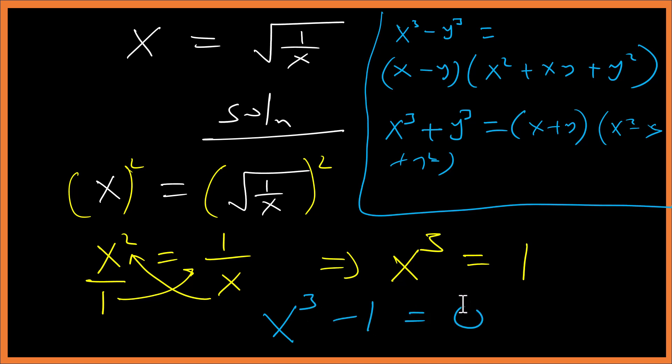From here you can write this one as x³ minus 1 equals zero. Our x is x, and our 1 is y. Remember we can write 1 as 1³, so we have x³ minus 1³ equals zero.